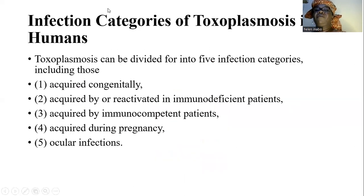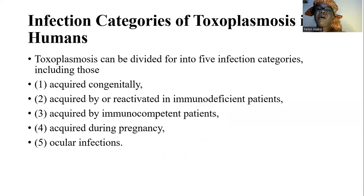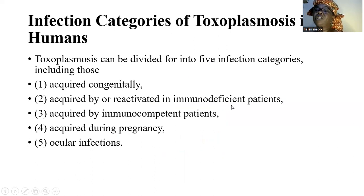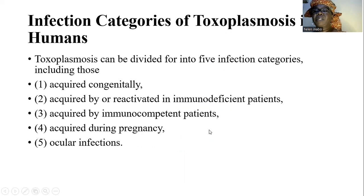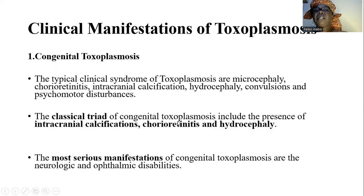There are five infection categories of toxoplasmosis. These include those acquired congenitally — congenital toxoplasmosis — then those acquired by or activated in immunodeficient or immunocompromised patients such as HIV patients, then those acquired by immunocompetent patients, those acquired during pregnancy, and ocular infections.